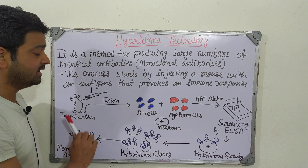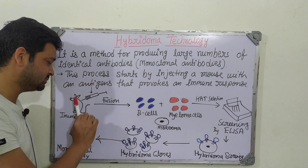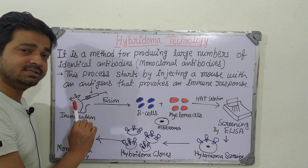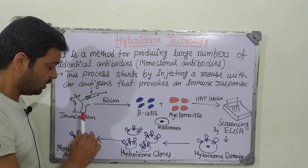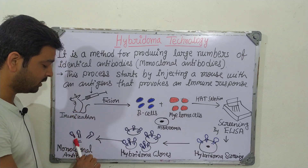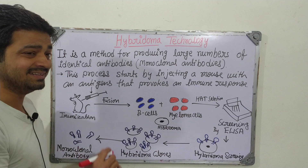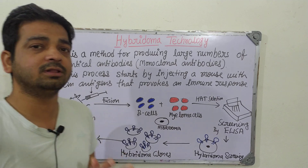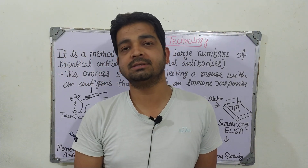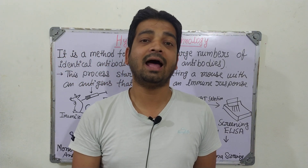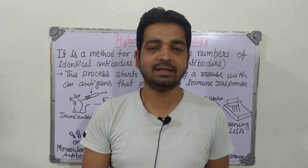The type of antigen injected into the mouse body determines what kind of monoclonal antibody will be produced — that desired antibody is what we call a monoclonal antibody. This is nothing but hybridoma technology. Thank you.